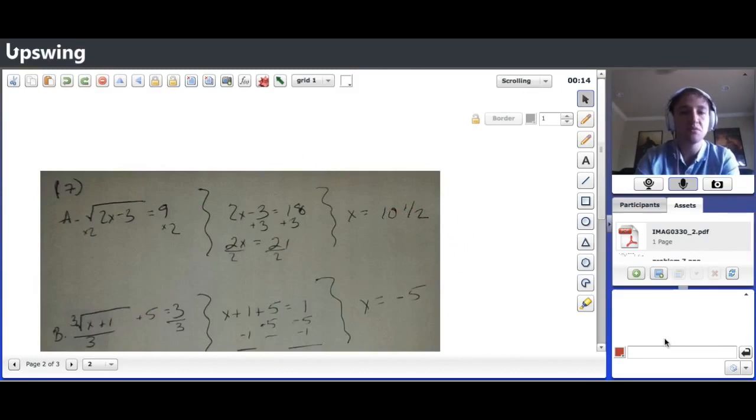Gotcha. Okay, so one of the things that I think you may be forgetting is how exactly to get rid of the radical at the beginning. So the little bar above the 2X minus 3, what that's telling you is to take the square root of either a number or an equation.